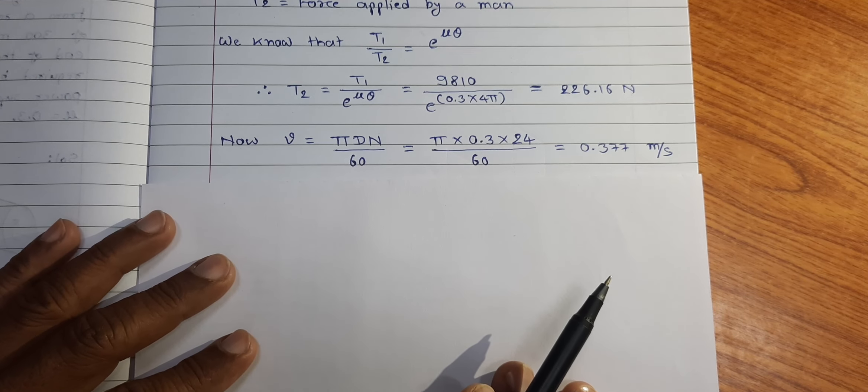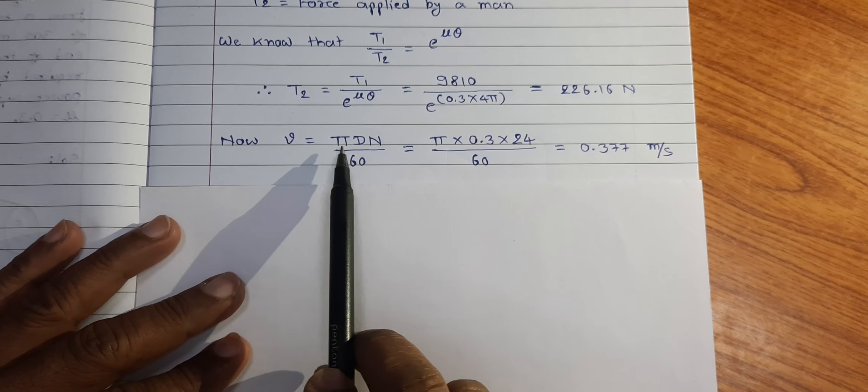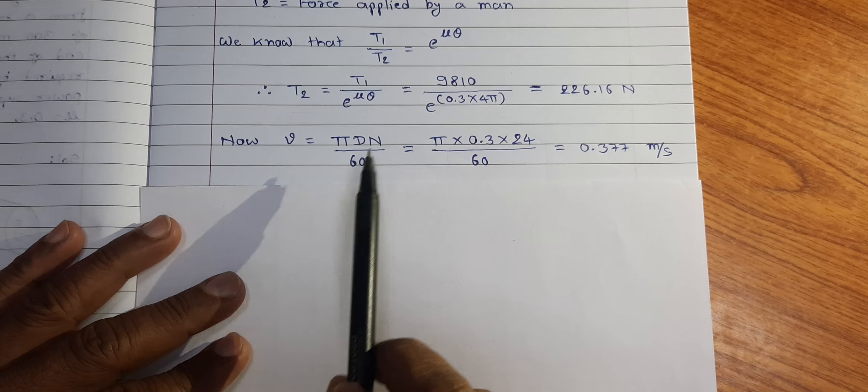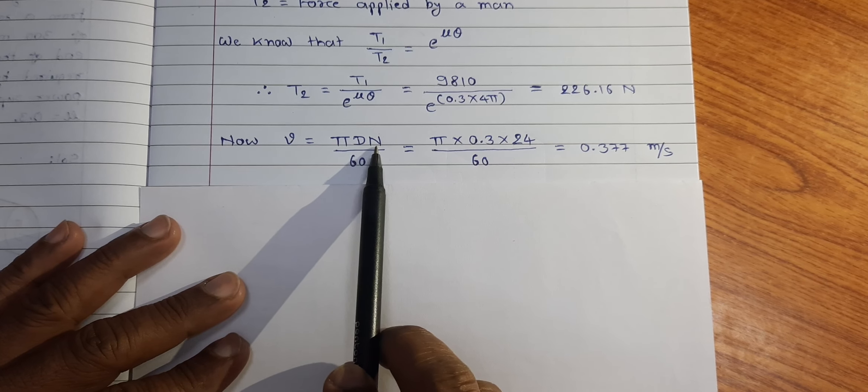Now, the peripheral velocity V is given by pi D N by 60 where D is diameter in meter and N is rotational speed of drum in RPM.